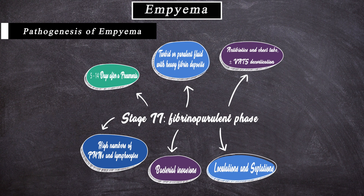Stage 2 is the fibrinopurulent phase, which typically occurs five to fourteen days after pneumonia. There is turbid or purulent fluid with heavy fibrin deposits and appearance of simple loculations and septations. There may be bacterial invasion with high numbers of polymorphonuclear leukocytes and lymphocytes. It is characterized by low pH, glucose, and increased LDH. Antibiotics and chest tube drainage are required.